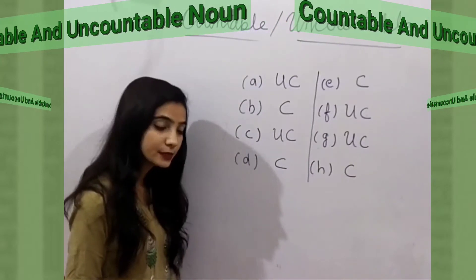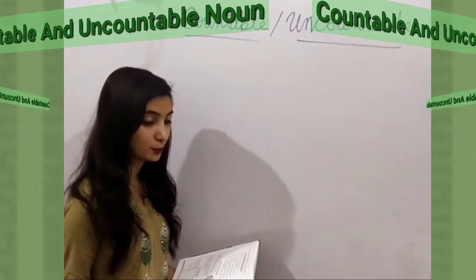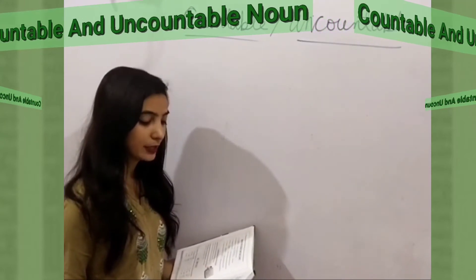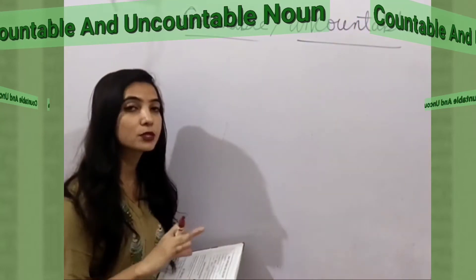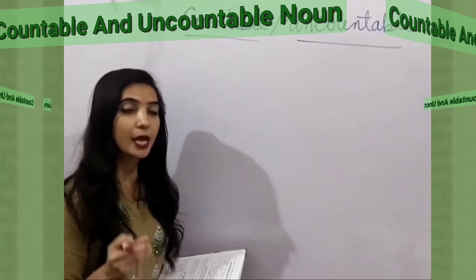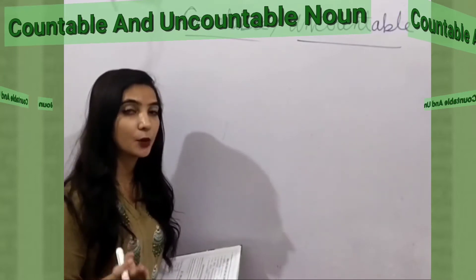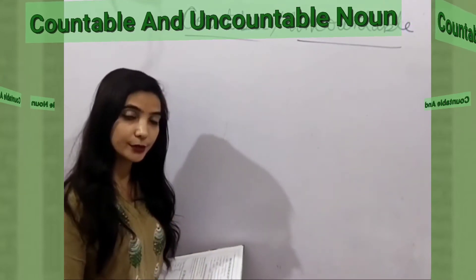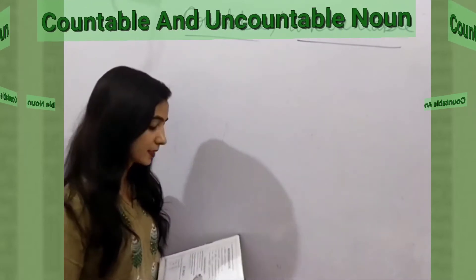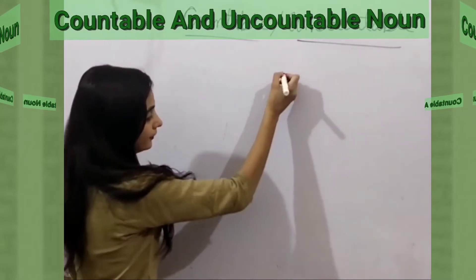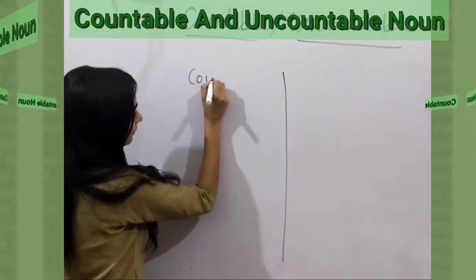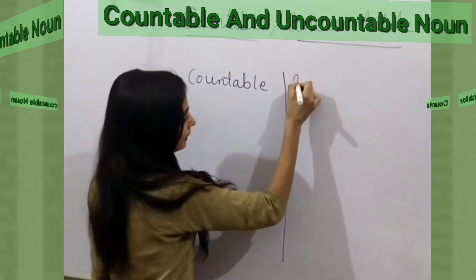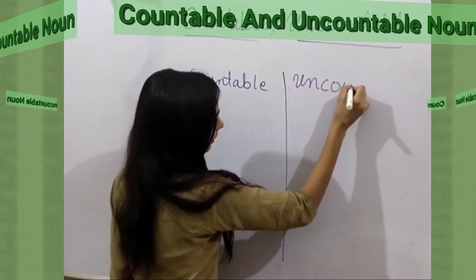Now we will do our next exercise, question number 12. Sort these nouns into countable and uncountable nouns. A box of nouns has been given to us and we'll have to separate them — write countable nouns in the countable column and uncountable nouns in the uncountable column.